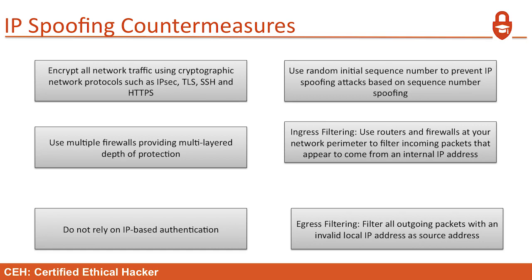Use ingress filtering: use routers and firewalls on your network perimeter to filter incoming packets that appear to be coming from an internal IP address. If it claims to be coming from a LAN address but is trying to come in from outside, that doesn't make sense — drop it. Egress filtering covers traffic going out: filter outgoing packets with an invalid local IP address as a source address. If the IP address is not correct, drop the packets.